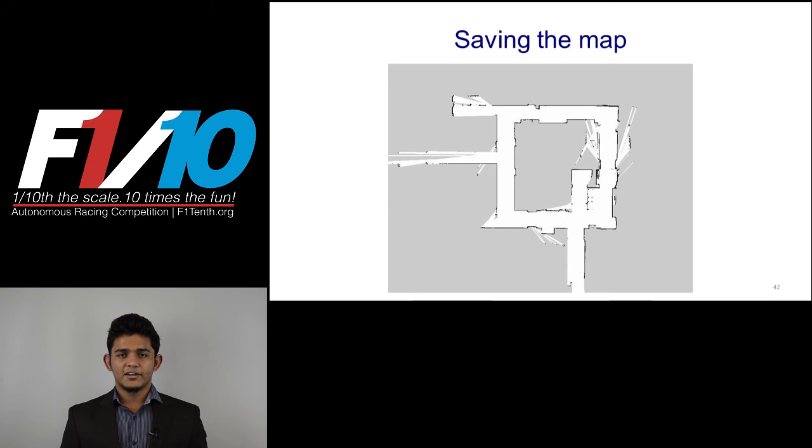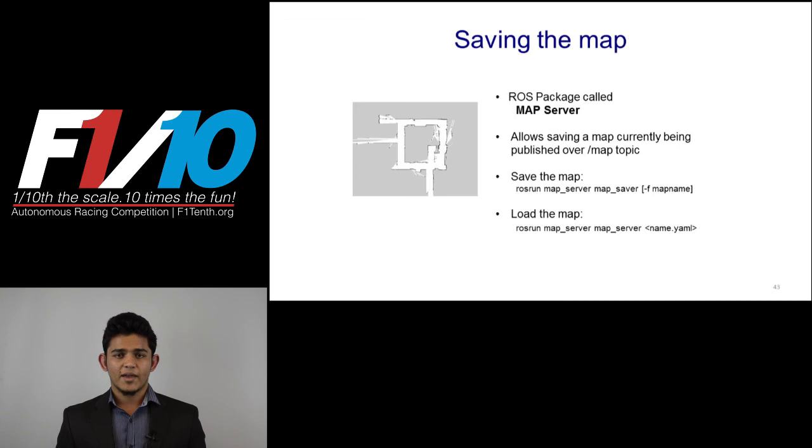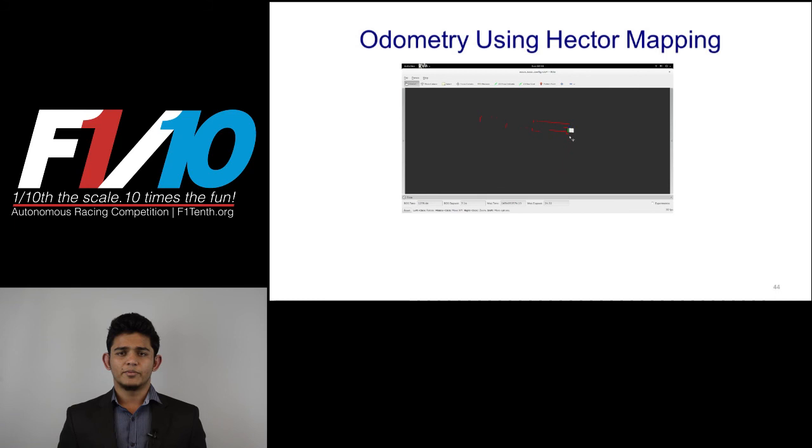The map generated here is now a base for further algorithms of localization and planning. It is essential to save this map and be capable of loading it later on. ROS package called map server provides this functionality.